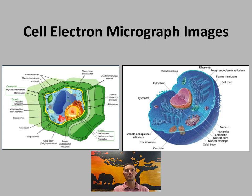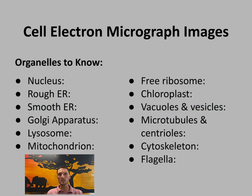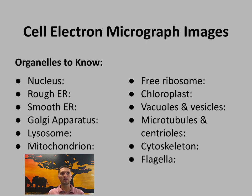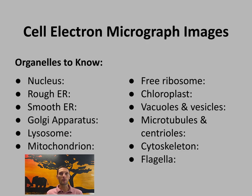The key organelles to focus on are: the nucleus, rough endoplasmic reticulum (rough ER), smooth endoplasmic reticulum, Golgi apparatus, lysosomes, mitochondria, free-floating ribosomes, attached ribosomes on the rough ER, chloroplasts, vacuoles and vesicles, microtubules and centrioles, the cytoskeleton, flagella, and cilia. You should be able to recognize, draw, and know the functions of each.